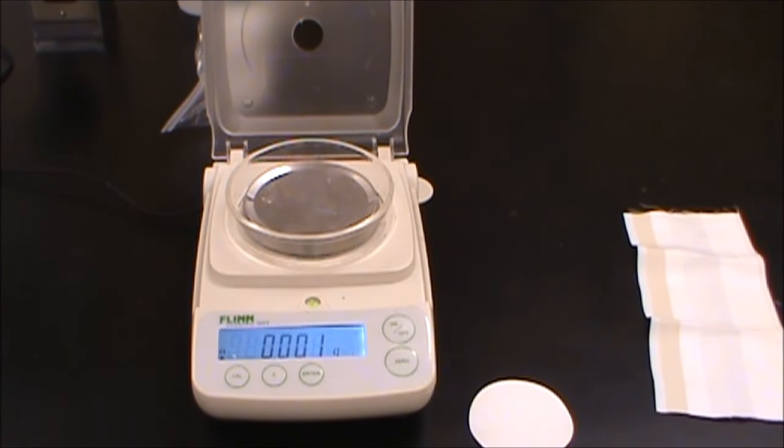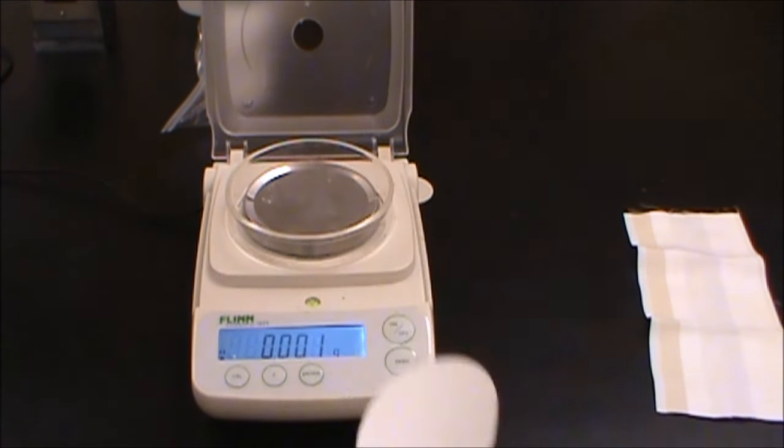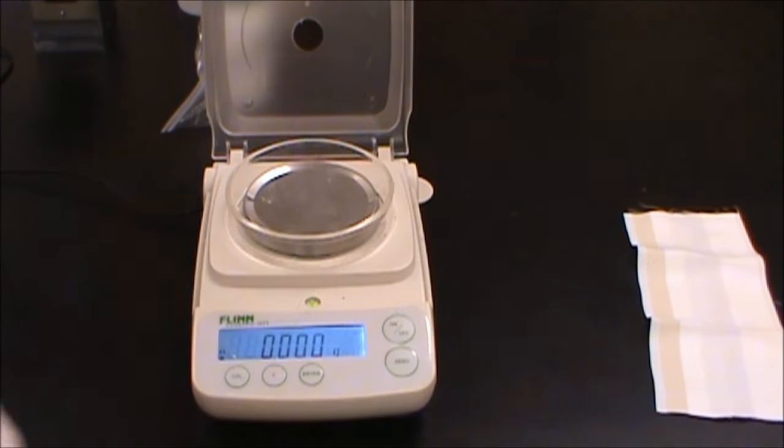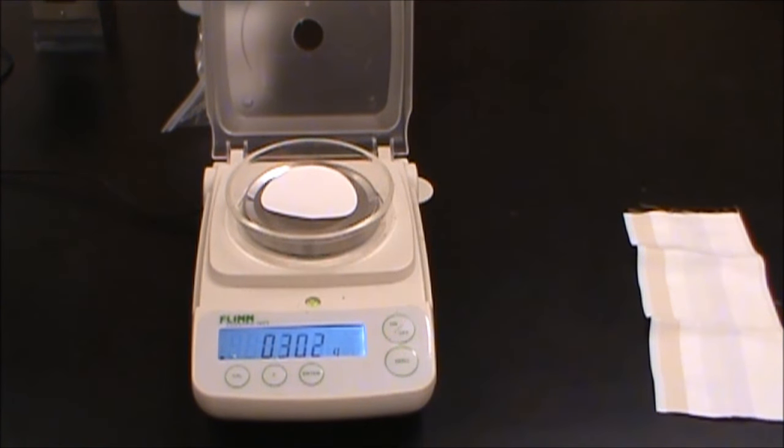So now our mixture is just getting done with going through the reaction. What we want to do now is we want to filter out the indigo. So before we do that, since we're doing a quantitative, we're going to go ahead and get the mass of our filter paper while dry. And then write that down, 0.303 grams.